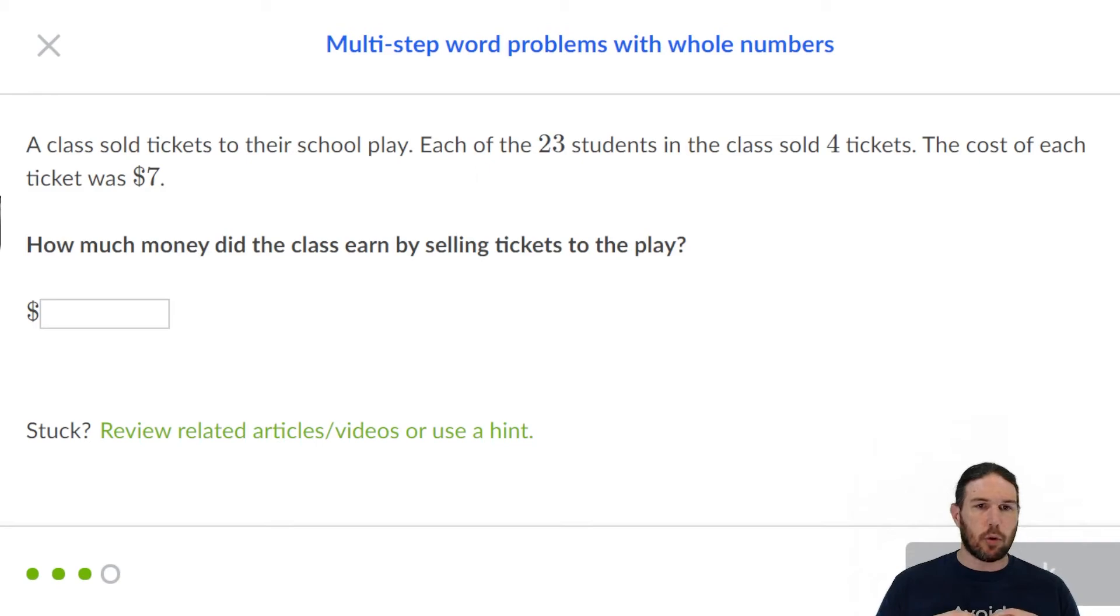A class sold tickets to their school play. Each of the 23 students in the class sold 4 tickets. The cost of each ticket was $7. This is another really great multiplication problem because we do 23 times 4 to find out the total number of tickets. Then we do that product times 7 to find out the total amount of money. Being able to do this quickly is a very useful skill to have.